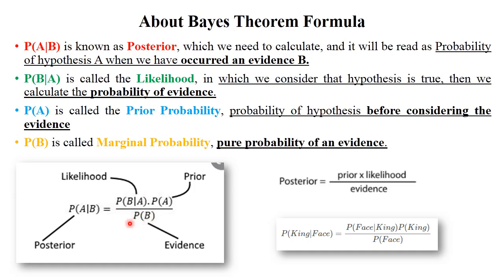The fourth term — probability of B — is called the evidence: a particular piece of evidence exists and you calculate the probability of the event based on it. In the prior case there is no evidence; you simply calculate the probability of the event. So there are four terms in the formula: posterior, likelihood, prior, and evidence.